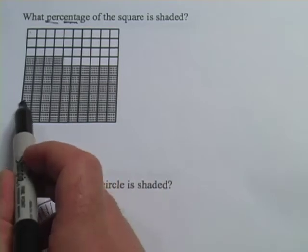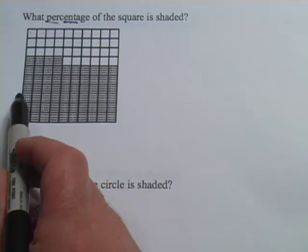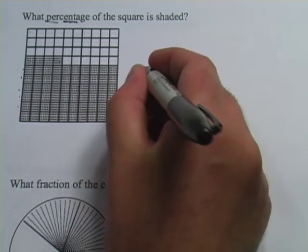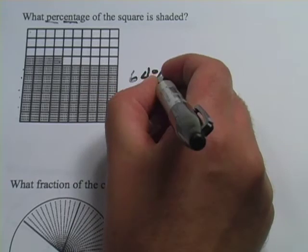And I've got, I'm just counting the rows: 10, 20, 30, 40, 50, 60, and then 1, 2, 3, 4. So that is 64 percent.